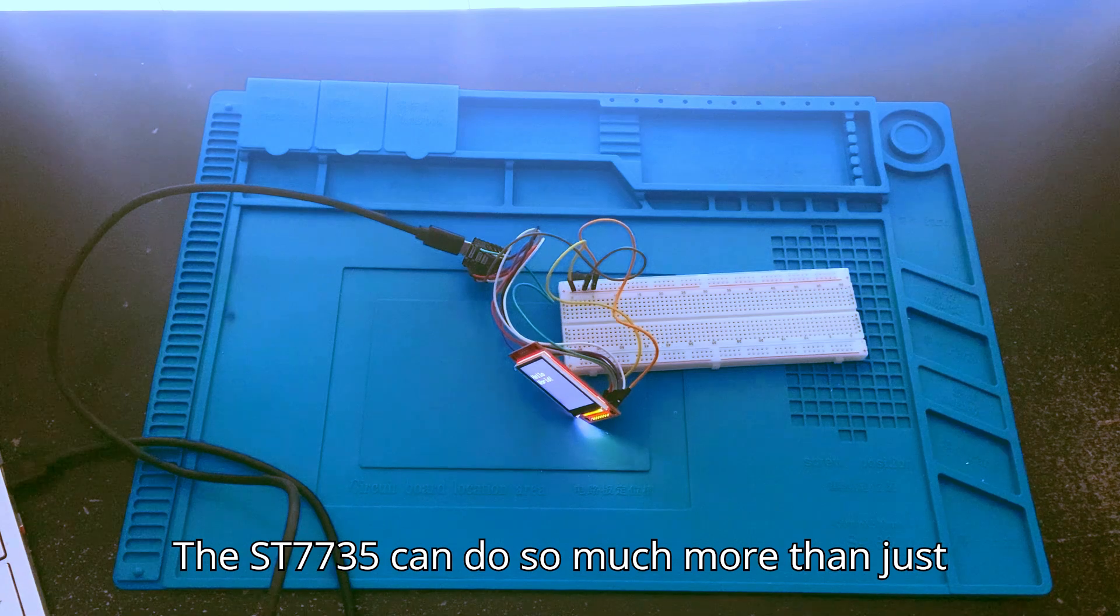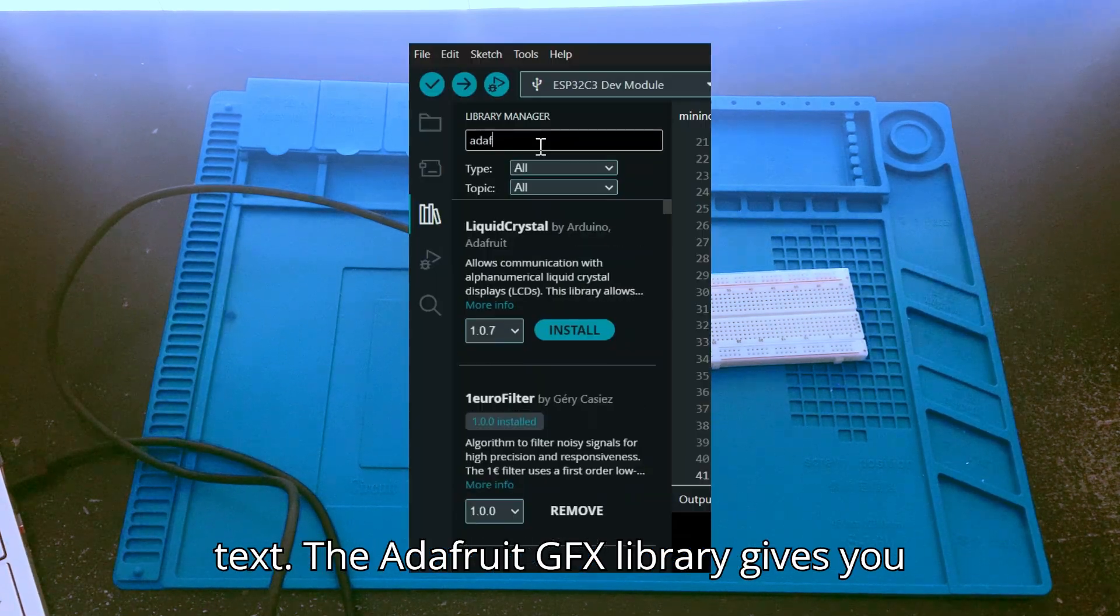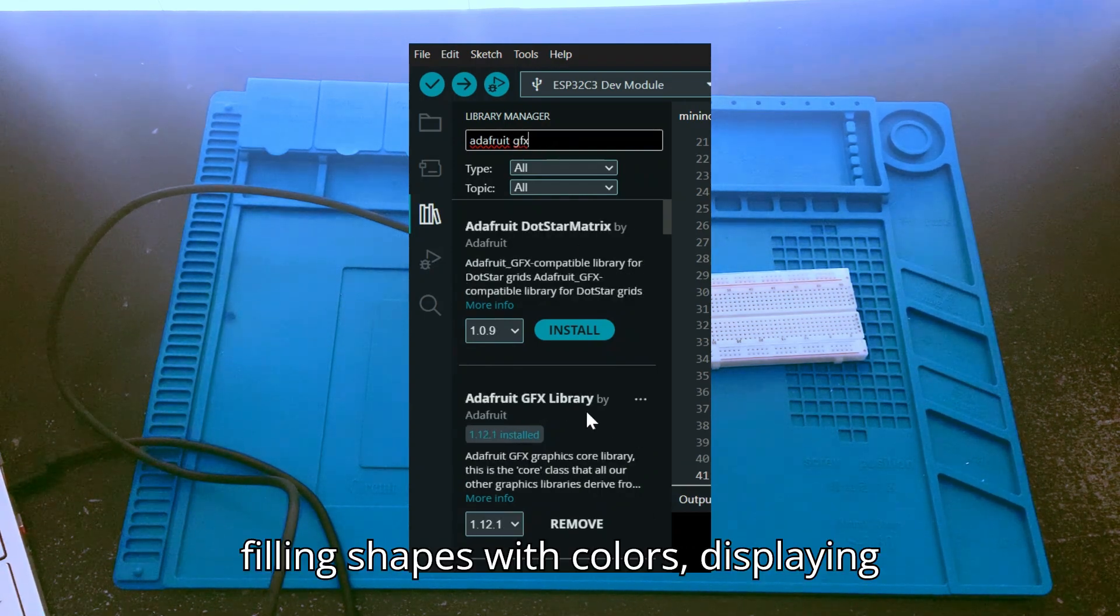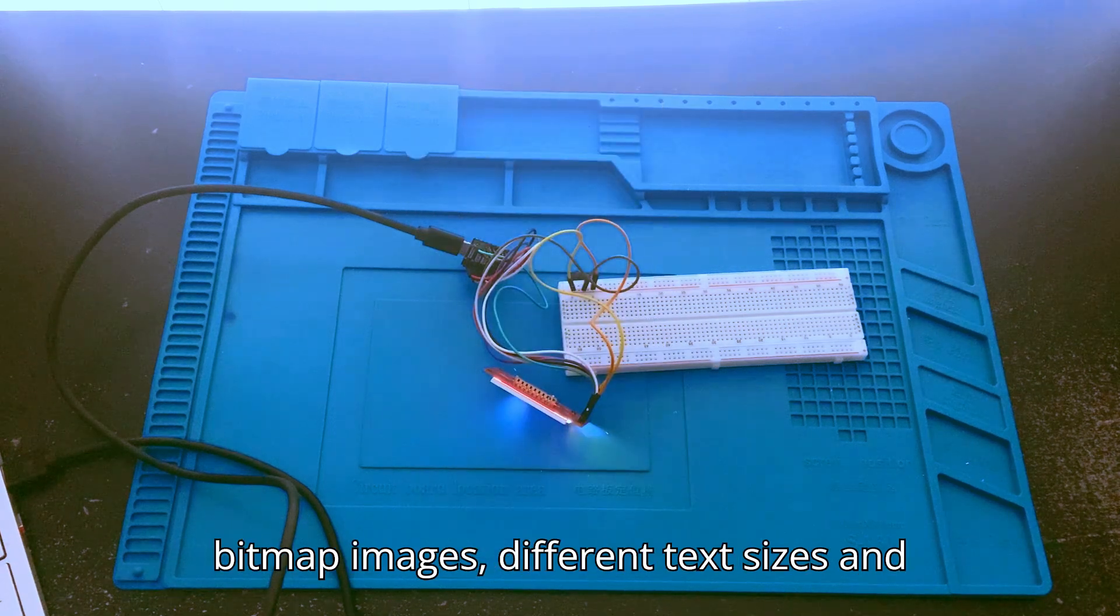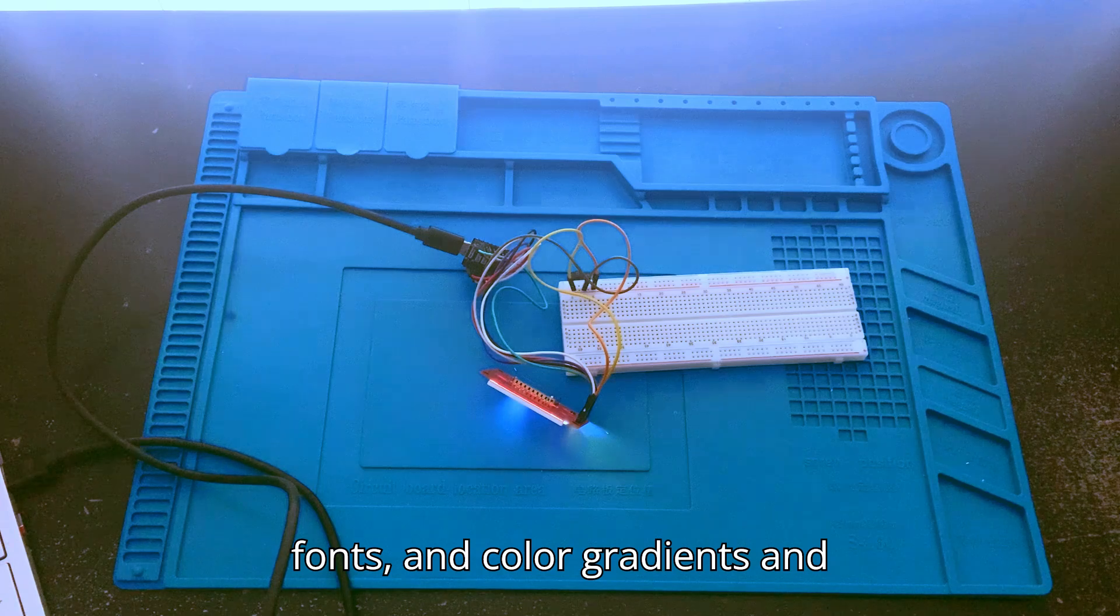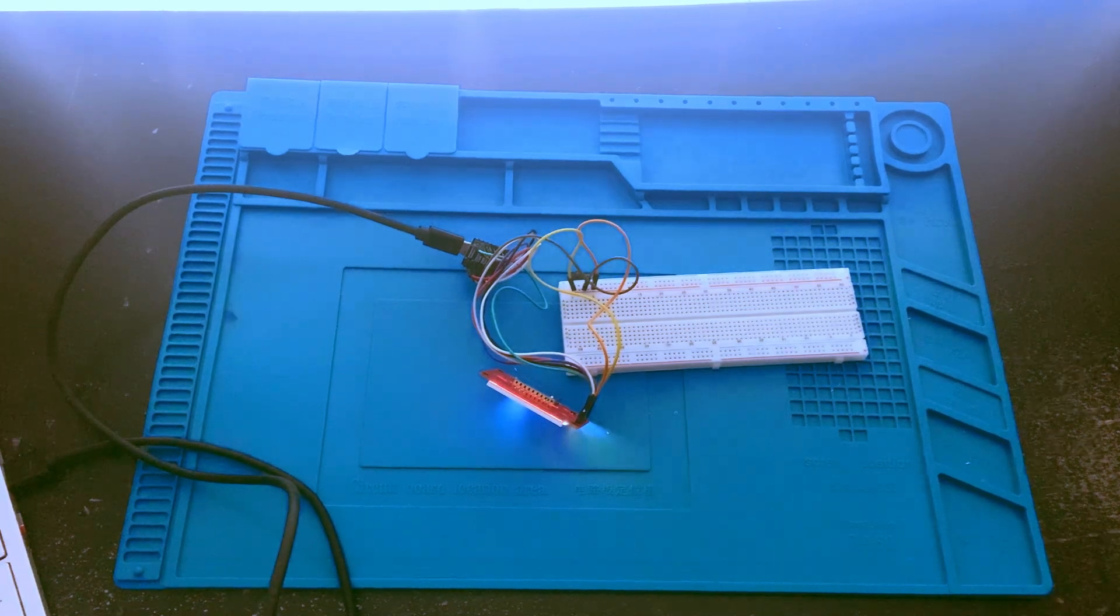The ST7735 can do so much more than just text. The Adafruit GFX library gives you tons of graphic functions: drawing pixels, lines, rectangles, and circles, filling shapes with colors, displaying bitmap images, different text sizes and fonts, and color gradients and animations. Here's a quick example, drawing some shapes. Let's do it.